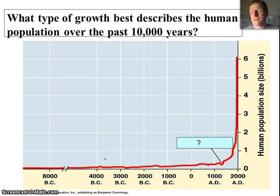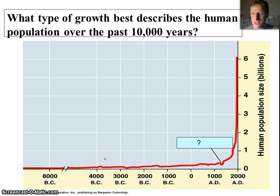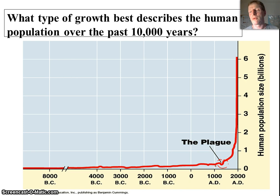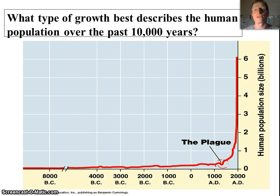Humans don't have predators, and we've yet to really hit our carrying capacity. If we look at human population growth over the past 10,000 years, it looks like exponential growth. There's a little blip — that's the plague. A third of the population died, but we rebounded. Even the influenza outbreak of 1918 or HIV don't even register in terms of the total number of people on Earth.